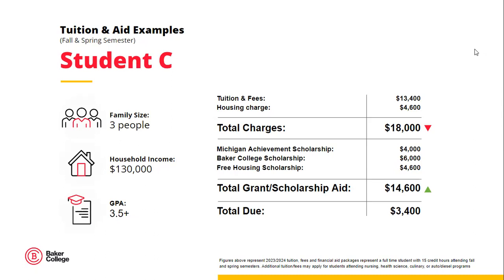Lastly, Student C has a household size of 3, a 2022 income of $130,000, and a high school GPA of 3.5 or higher. Like Student B, they have a balance after all gift aid is applied. But you can see that the household incomes between B and C are different, yet they are still eligible for the same amount of aid. This goes to show you that you never know what you could be eligible for. I've heard many families say they will not complete the FAFSA because they don't qualify for anything — as you can see through these examples, it doesn't hurt to try.